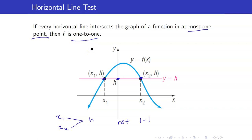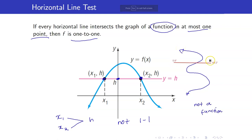Take note that the prerequisite for the horizontal line test is that you already have a function. So for example, I have a graph like this — is this one-to-one? You would think yes, it satisfies the horizontal line test because if you do a horizontal line, it will intersect the graph at exactly one point. However, you failed to do the vertical line test first. So remember, do not use the horizontal line test without using the vertical line test first. The vertical line test is a sort of prerequisite for the horizontal line test.